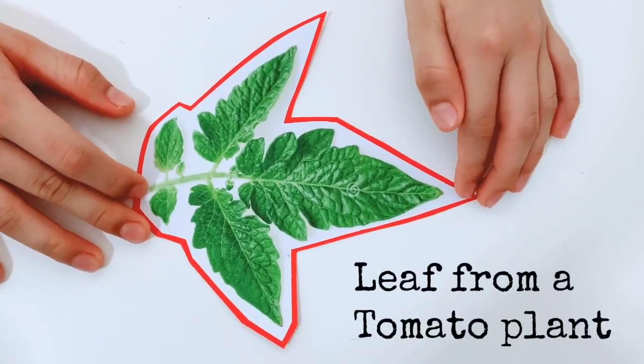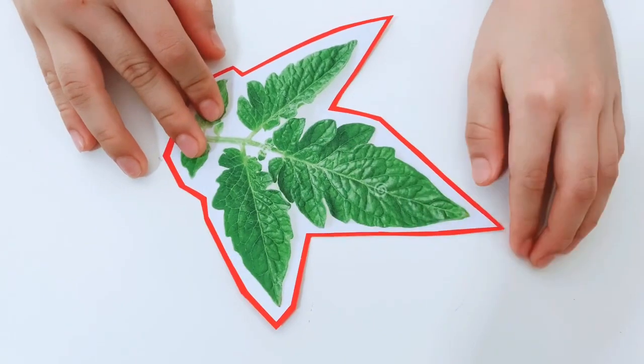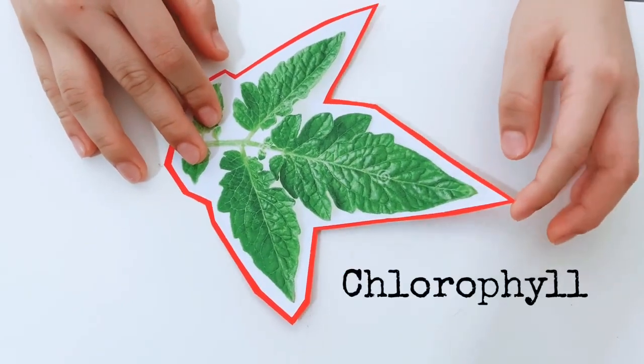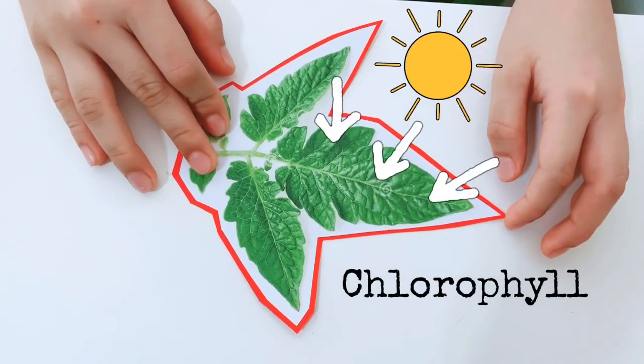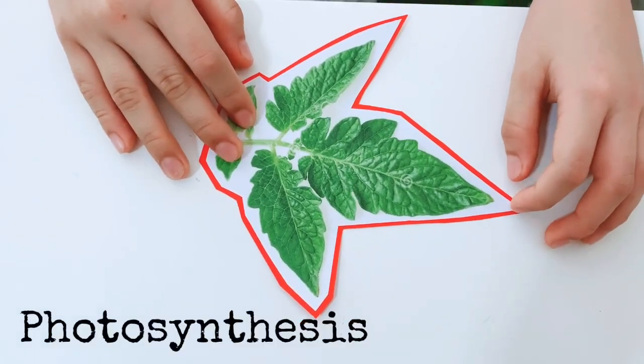This is a picture of a tomato leaf. The surface of the leaf contains chlorophyll that absorbs sunlight to help make food for the plant in the process called photosynthesis.